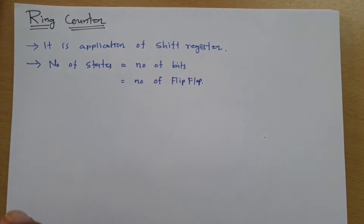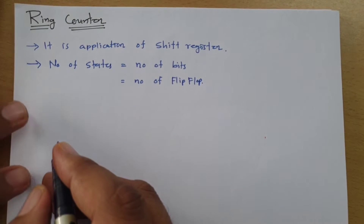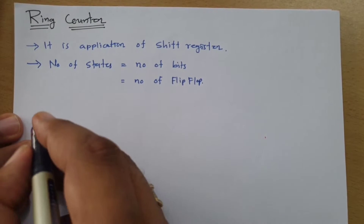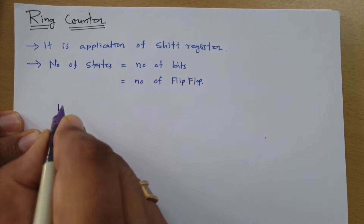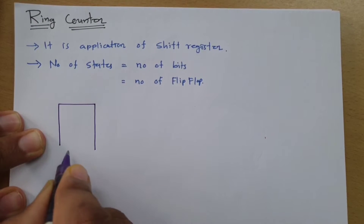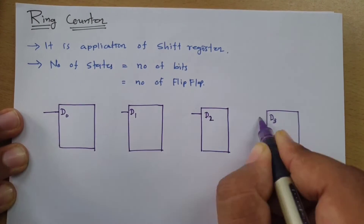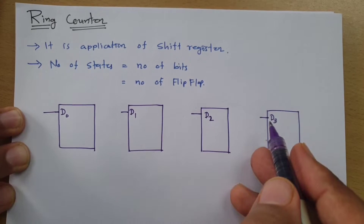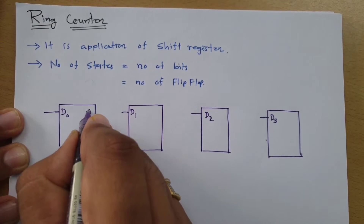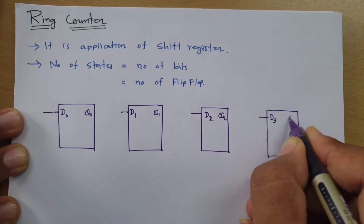Let me explain first how this is an application of a shift register. Here I'll draw a 4-bit shift register. For a 4-bit shift register, we need 4 memory elements. So here I'm considering 4 D flip-flops. This is my D input — d0, d1, d2, d3 — and my outputs are q0, q1, q2, and q3.